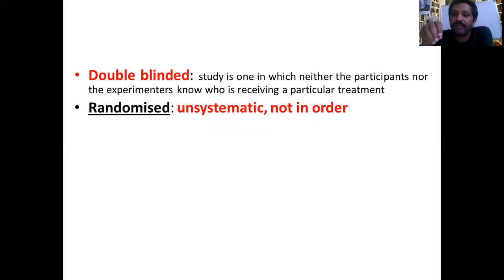Randomized means not in order, unsystematic. Randomized treatments. Double-blinded randomized is a part of clinical trials. So one is double-blinded and randomized. So the choosing of volunteers is also randomized. They don't choose the particular volunteer or dummy or real drug.